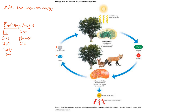So what goes in during photosynthesis? Carbon dioxide, water, and sunlight — to produce glucose and oxygen.